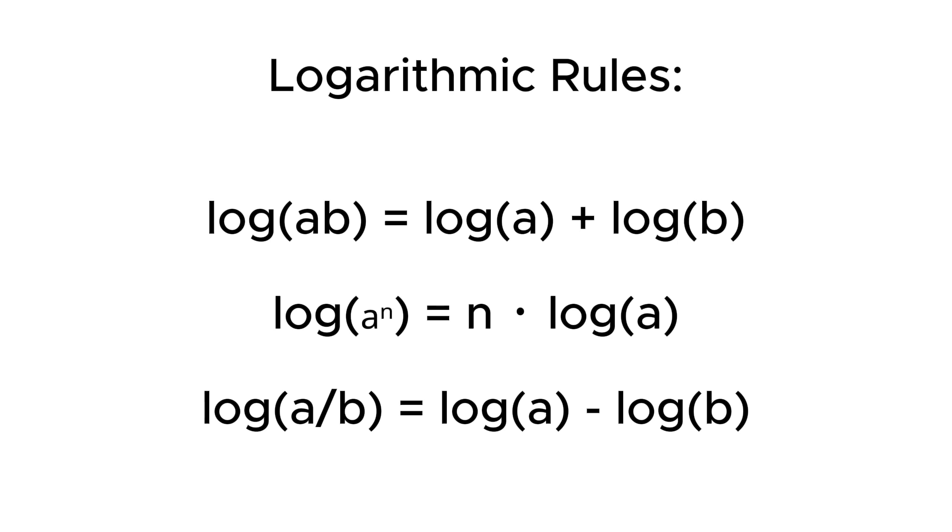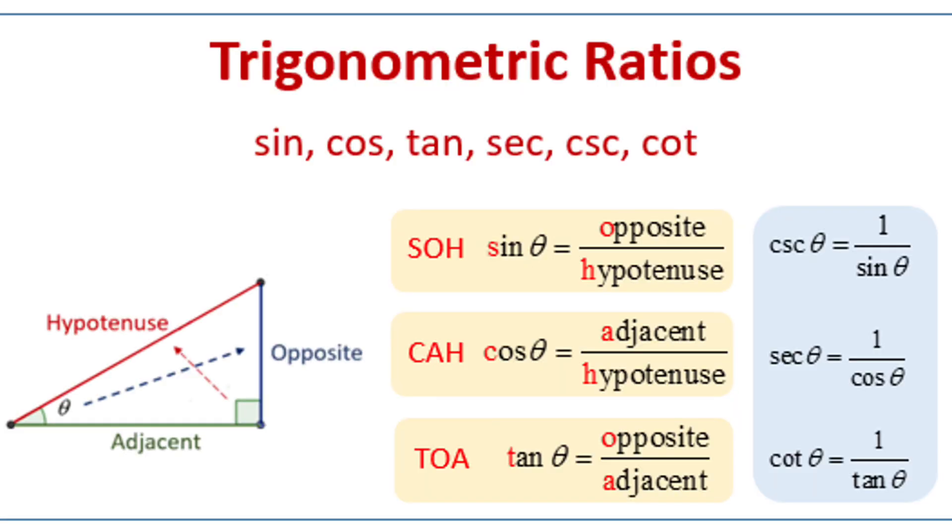Now let's talk about trigonometry. In right angle triangles, you can choose any angle and apply these trigonometric ratios: sine, cosine, and tangent. For sine, it's opposite divided by hypotenuse. For cosine, it's adjacent divided by hypotenuse. For tangent, it's opposite divided by adjacent.